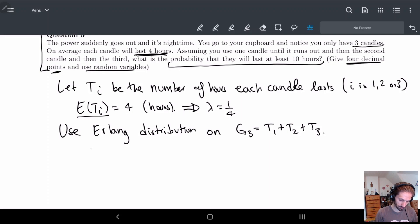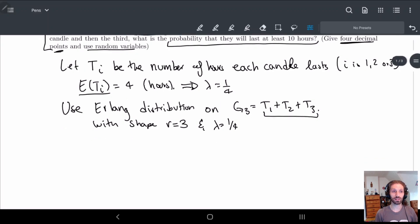So here we have with shape, so what's the shape? Remember that this is the number r, how far this goes. We have three variables. So with shape r equal 3 and lambda equal 1 fourth. So this is where we got the lambda, why we had to get the lambda from. We got this from the expected value. And so we want to know the probability that this is at least 10 hours. So what's the probability that g3 is at least 10 hours, 10 or greater hours.